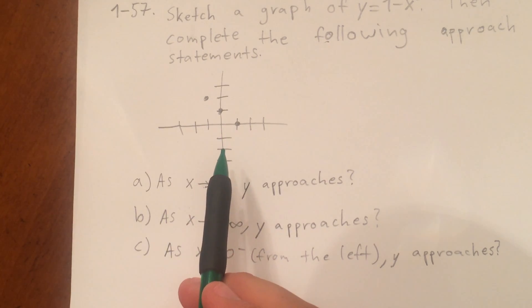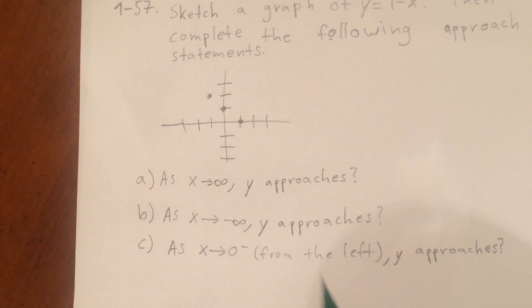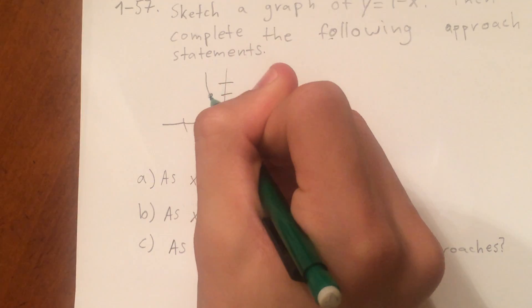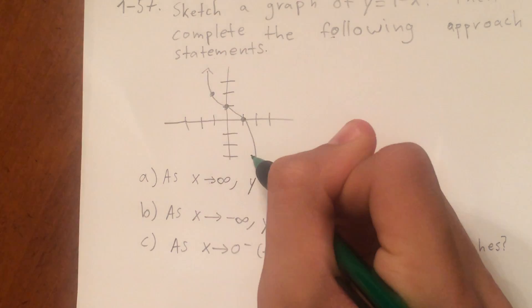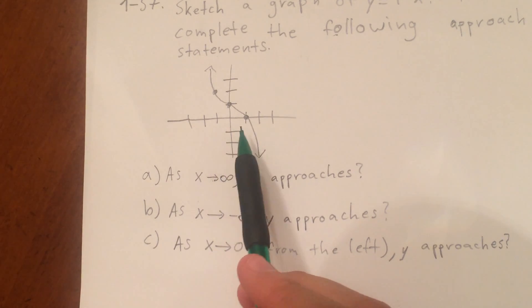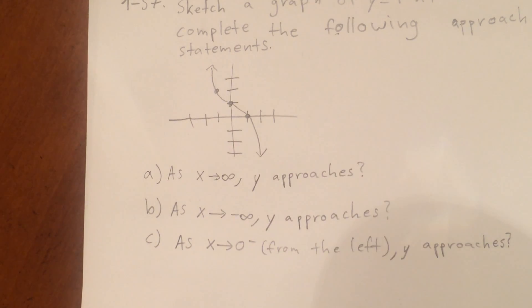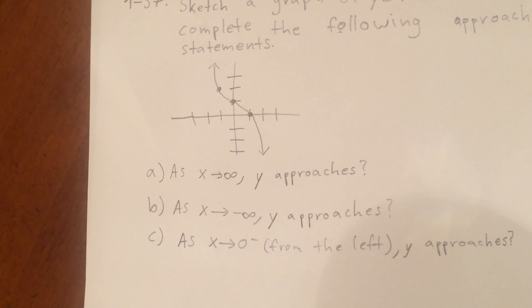And you start to see that the graph, you may know that the graph of 1 minus x cubed should look something like this even before plugging in the points. But plugging in the points helps give specific points on the graph.